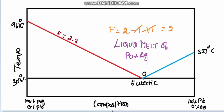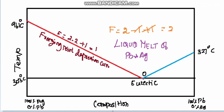Now let us calculate the degrees of freedom along the curve. F = C − P + 1. The number of components is 2. Along the red color curve, solid silver exists in equilibrium with the liquid melt, so the number of phases is 2. Therefore F = 2 − 2 + 1 = 1. The system is univariant along the curves, and bivariant under the area.